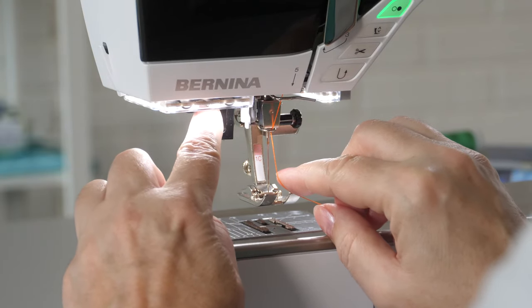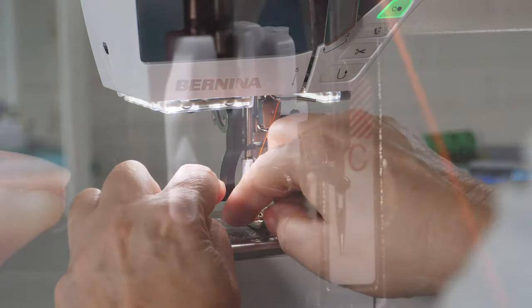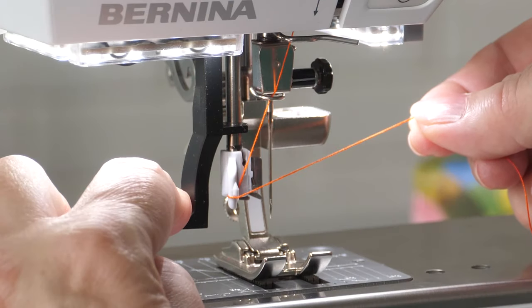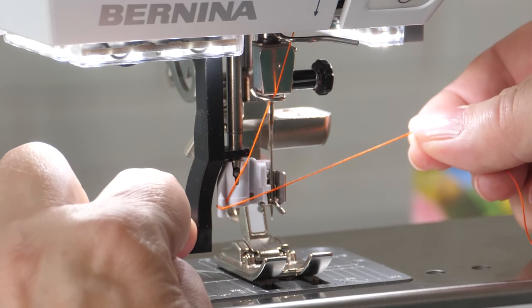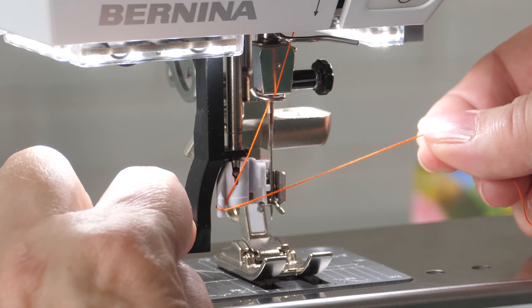Push the needle threader lever halfway down and bring the thread from back left to front right around the grey guide. Push the needle threader lever fully down, bringing the tiny hook through the needle eye to catch the thread.